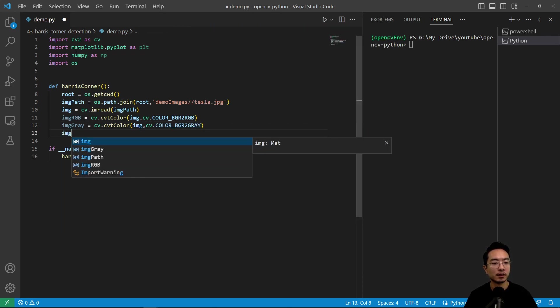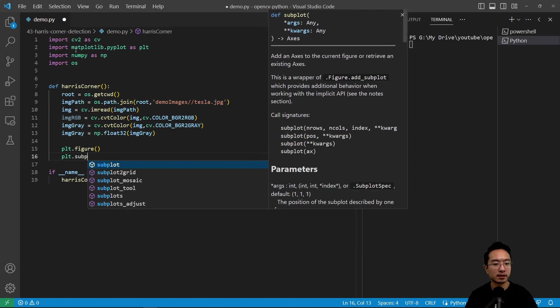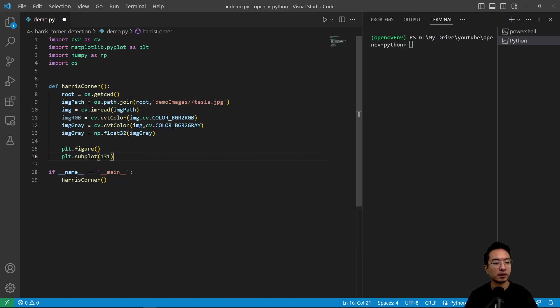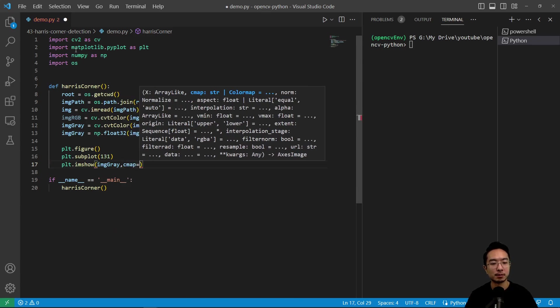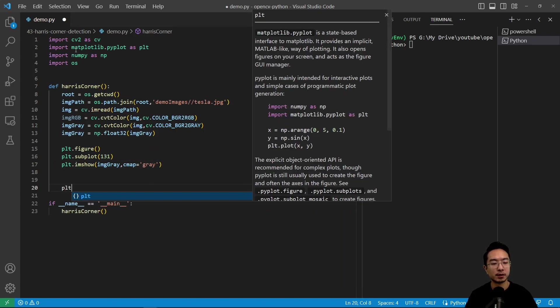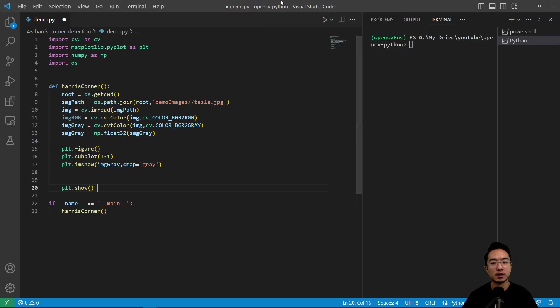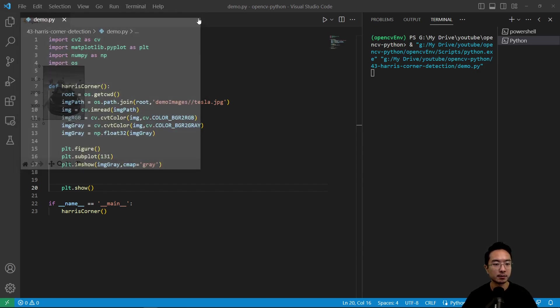So now we have another gray equals, we're going to do a data type conversion np.float32, and we'll pass in our gray image. So plt.figure, let's go ahead and look at our image. So plt.subplot of 131, and then plt.imshow, and we'll pass in our grayscale image, cmap of gray, and then plt.show to show the image. So if I go ahead and run this, you can see this is a grayscale image that we're working with.